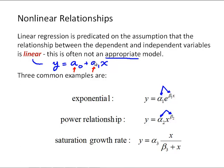And saturation growth rate. For this model we have one constant alpha3 and one constant beta3. Again, two constants but not in a linear form. Sometimes these models can be transformed into a linear form and we can still do the curve fit with linear regression. So let's look at examples for these three relationships.